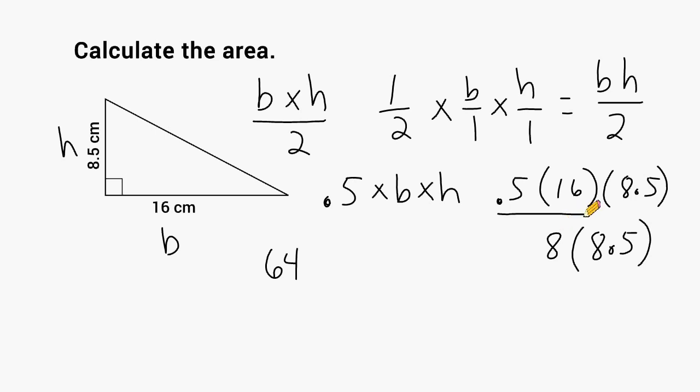And now we're going to take 8 and multiply it by 0.5, which is the same thing as taking half of 8, and half of 8 is 4. So I take these two results now and add them together for a total of 68. So the area of this triangle is 68 square centimeters.